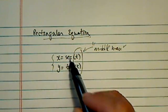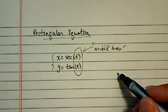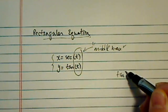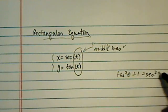Now, once you have a secant and tangent, there is an equation that says tangent squared theta plus 1 equal to secant squared.